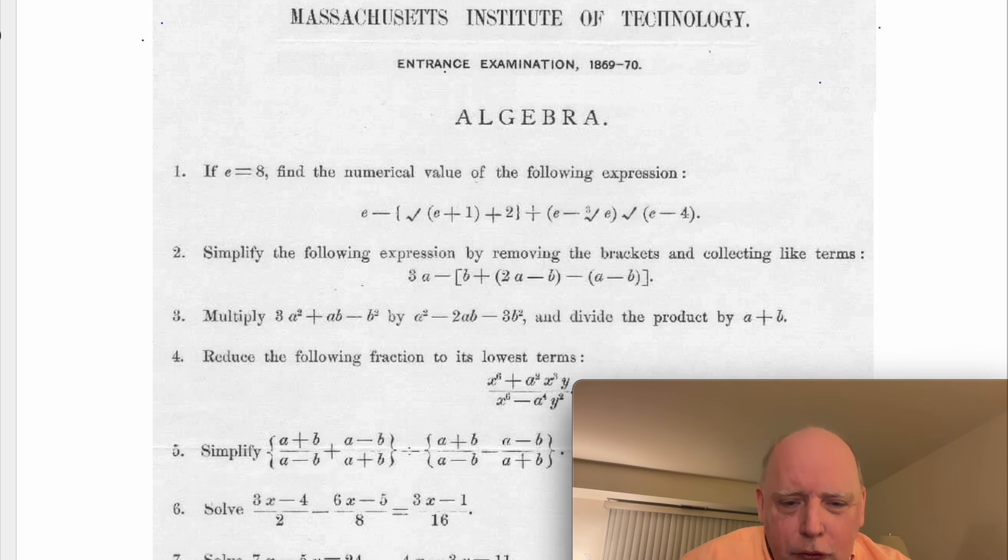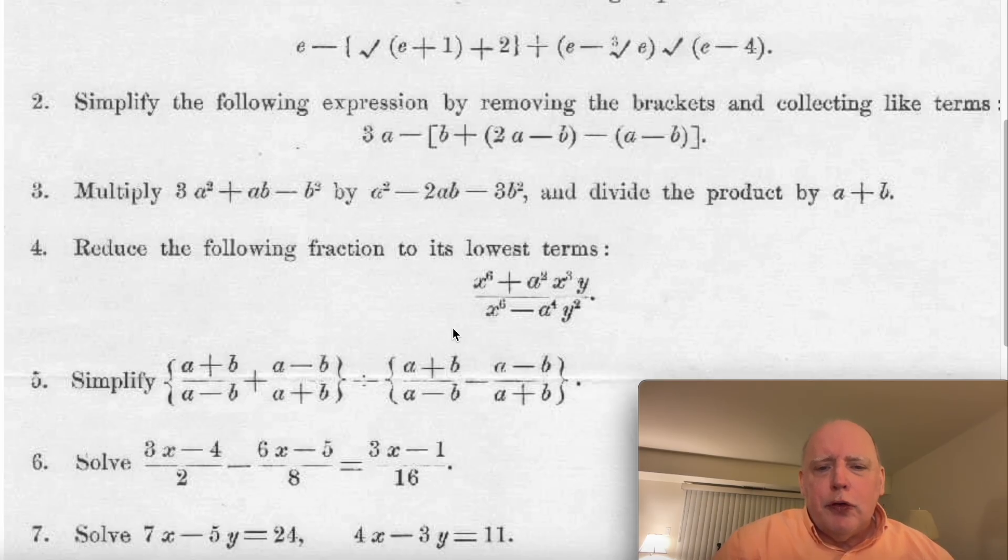As you can see, the date here is June 7, 1869. Problem number four, reduce this fraction to lowest terms, so let's take a look at it.